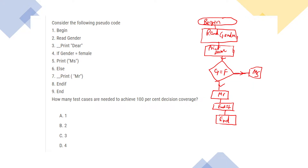Here is one decision, so that is one test case. There is one more decision, so here is one more test case. Two test cases are required to get 100% decision coverage. The answer is two.